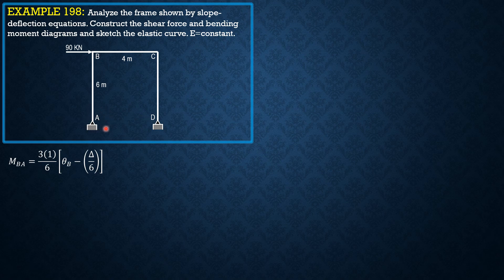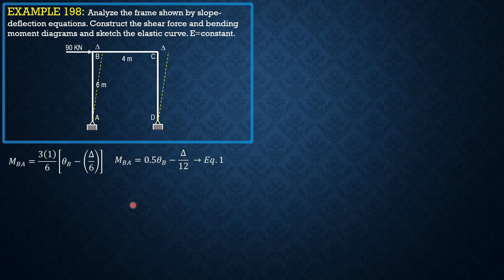Since A is a pin and D is a pin, there will be no moment at A and D. We establish the moment equation MBA. By the slope deflection equation, it is 3EI over L times the quantity (theta near minus delta over L), plus the fixing moment near minus one-half fixing moment far. With 3 times EI which is 1, over L which is 6, and no fixed end moments, moment MBA simplifies to 0.5 theta_B minus delta over 12. Call that equation 1.